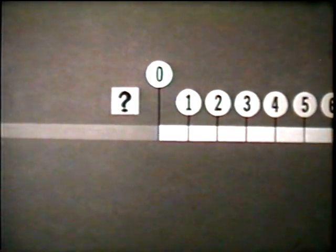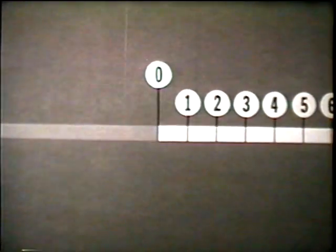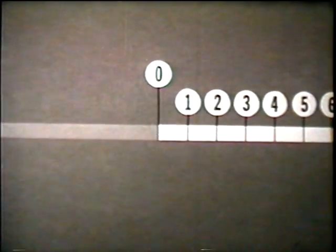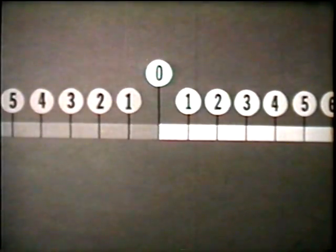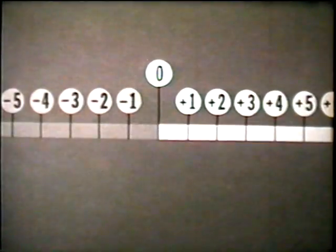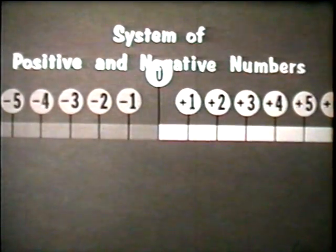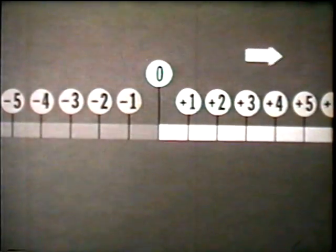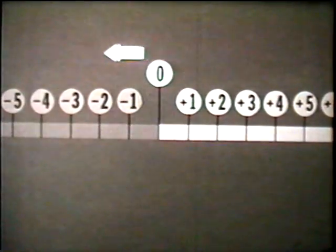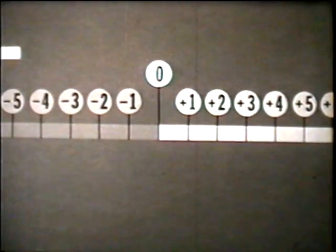By enlarging the system of numbers. To do this, numbers are added to the number line that are less than zero, counting to the left. These numbers to the left of zero are called negative, while the numbers to the right are now called positive. Movement to the right is positive and numbers become larger. Movement to the left is negative and numbers become smaller.